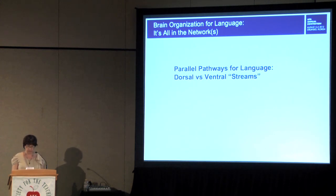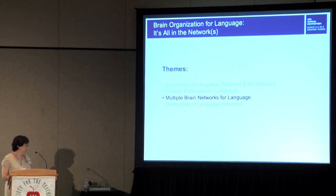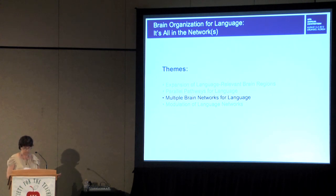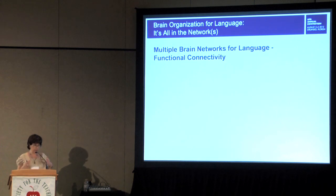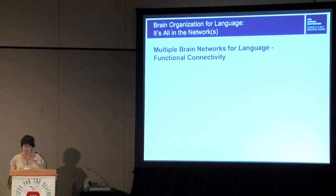It should be clear by now that there are many different brain regions important for language. However, this does not mean that each one is brought into play in all language contexts. Rather, the evidence suggests that somewhat different networks of brain areas are recruited depending on the type of linguistic activity we are engaged in at the moment. This brings me to the third theme. Any language activity requires an interconnected network of synchronized brain areas that function together. We can investigate this using functional connectivity analyses — identifying brain areas whose activity rises and falls at the same time — representing a functional network of brain areas that work together to perform a particular task.